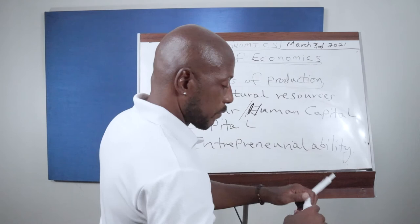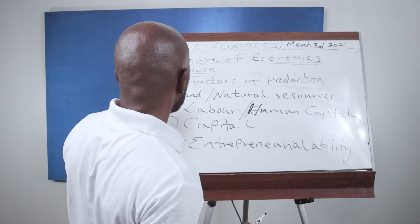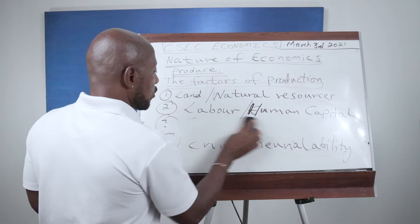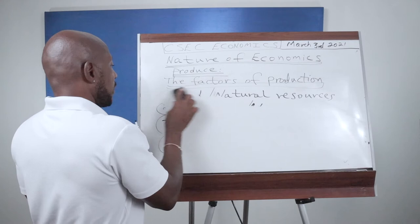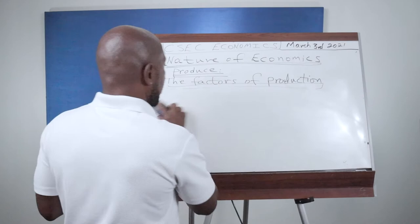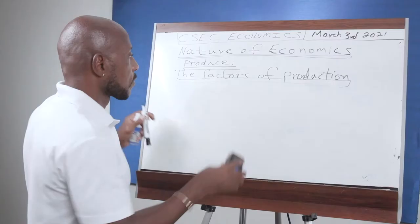By extension, there must be payment for these factors of production because they are owned. In the process of using these factors of production, payment must be made for them. So let's quickly talk about the payment for the different factors of production.